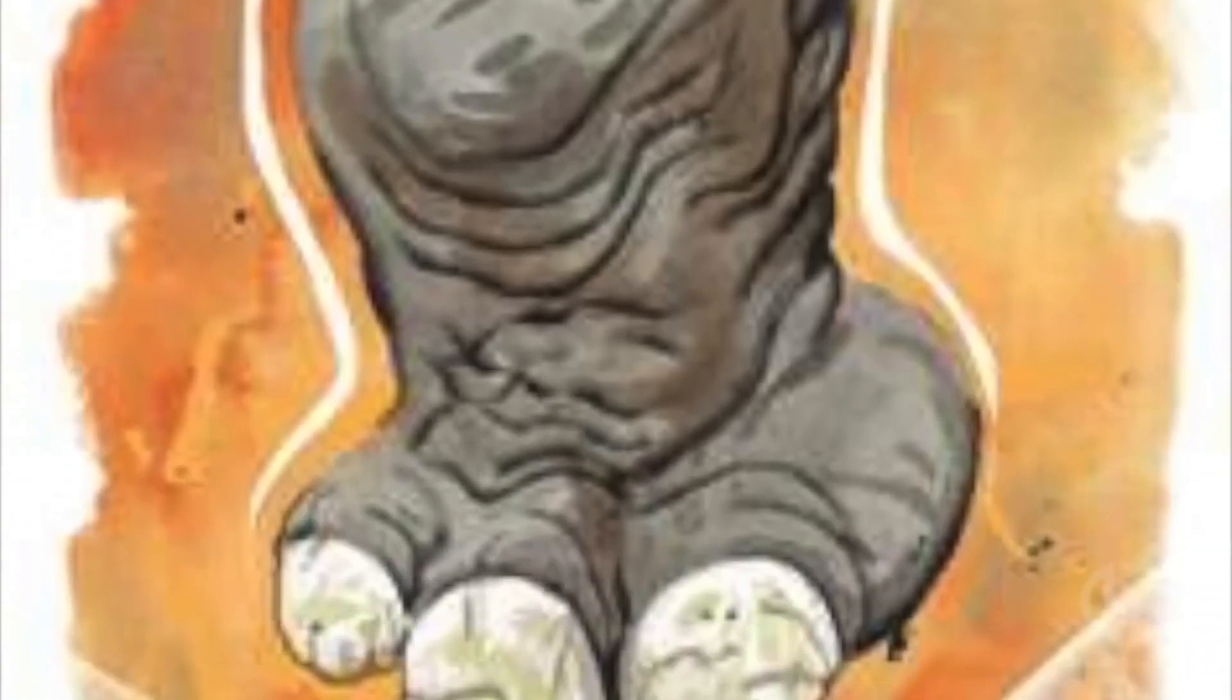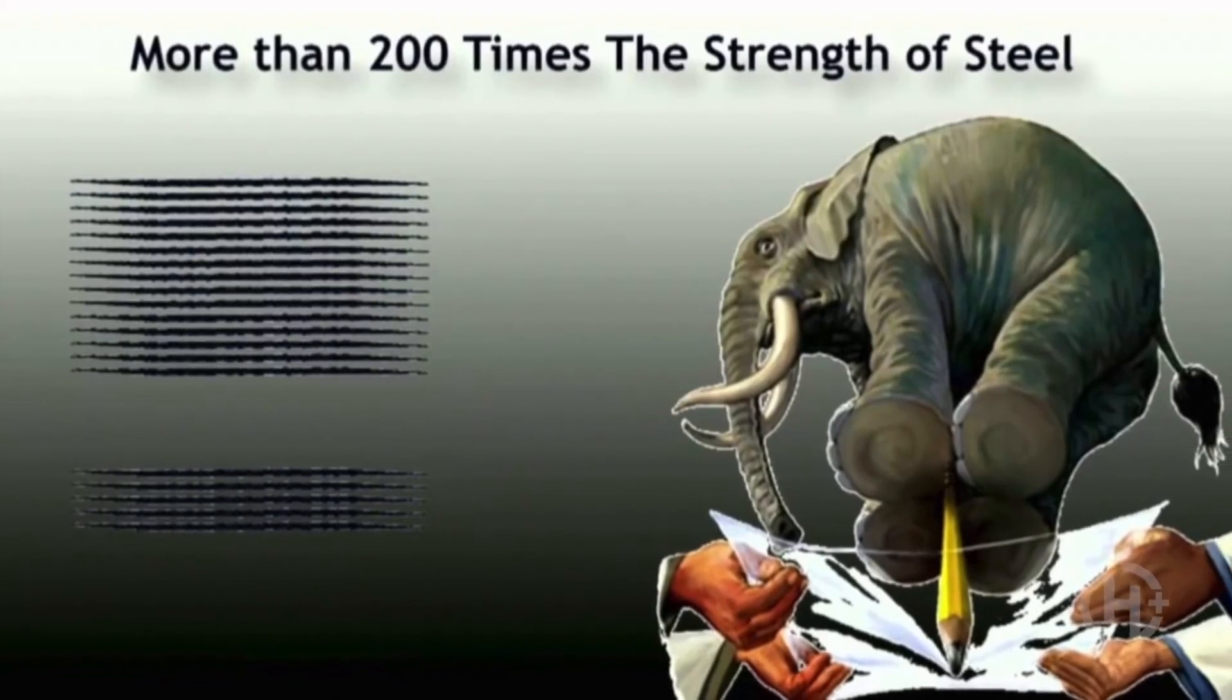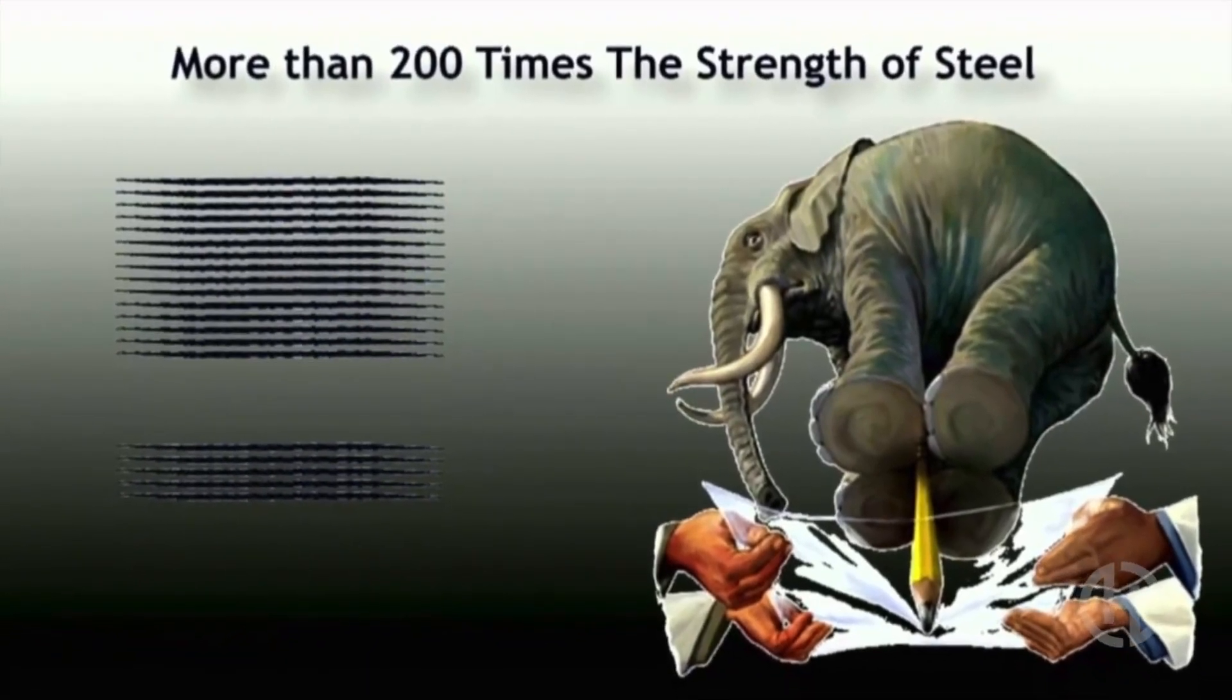In fact, you could take an elephant, balance it on a sharpened pencil, and then place that pencil on a sheet of graphene as thick as Saran Wrap. And believe it or not, that sheet will not break.